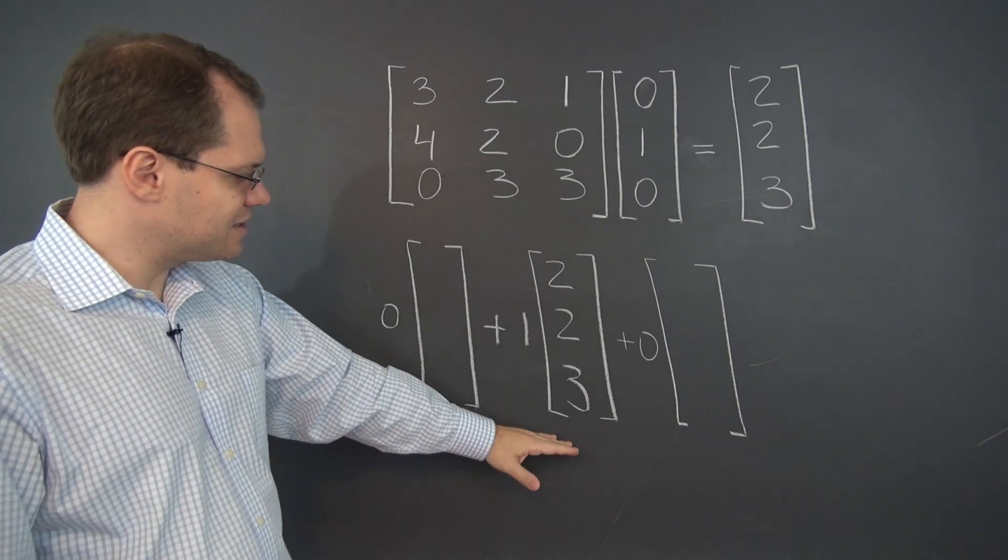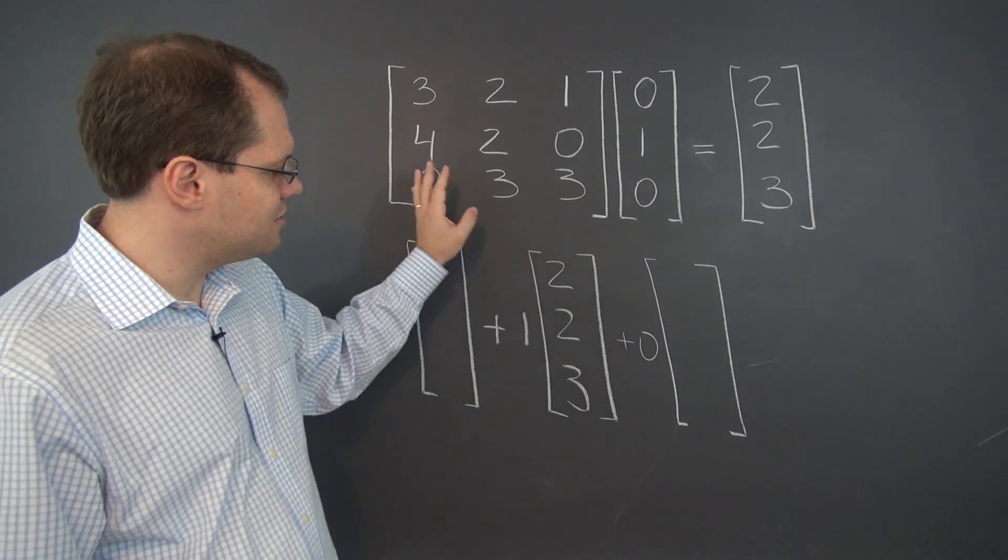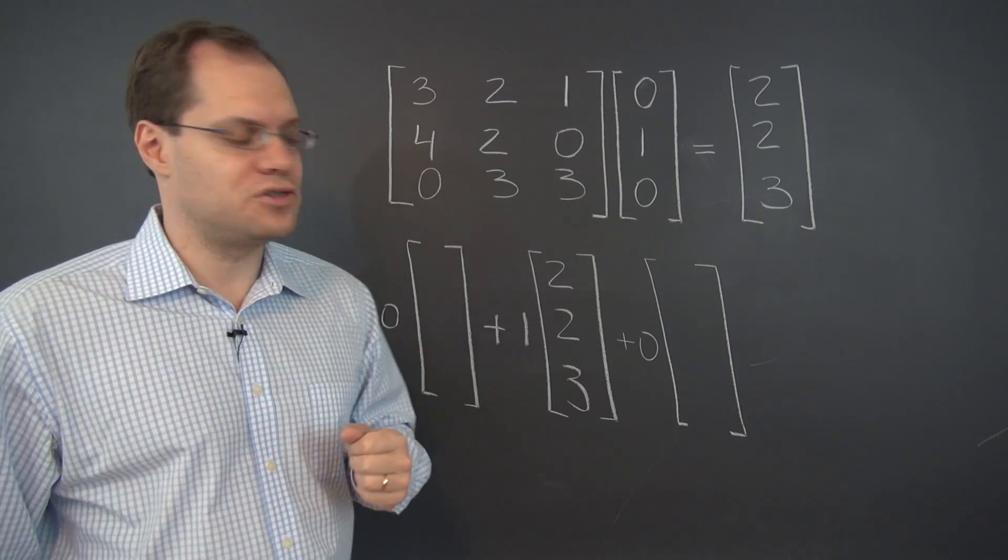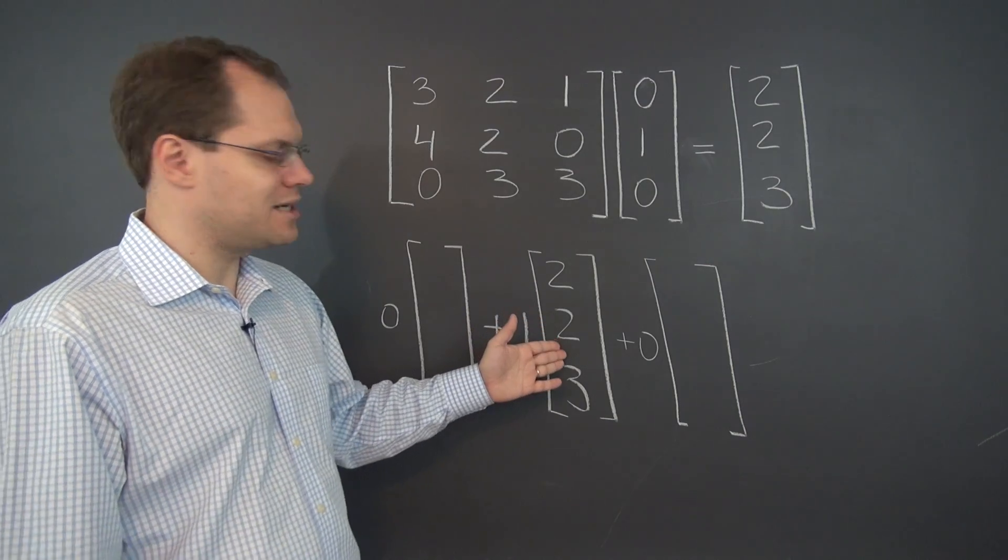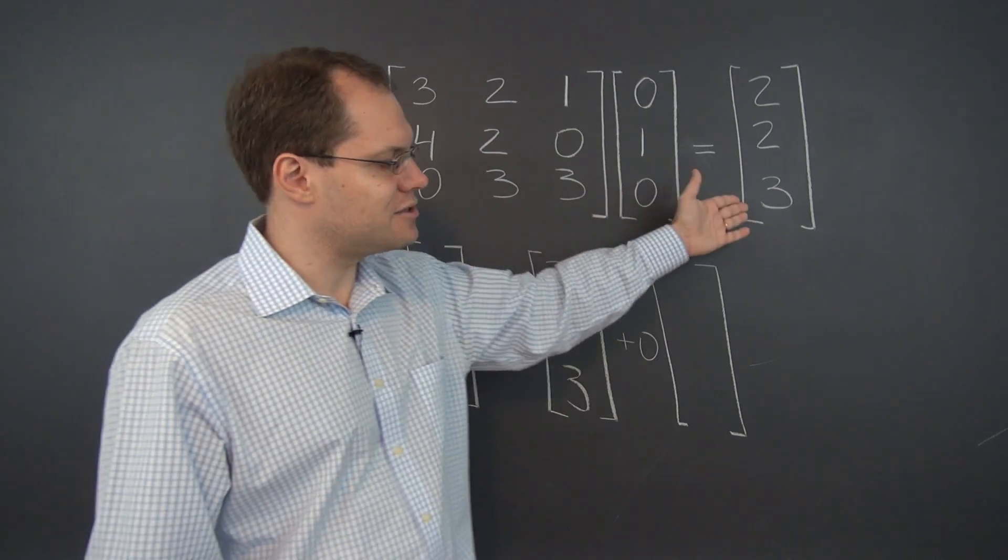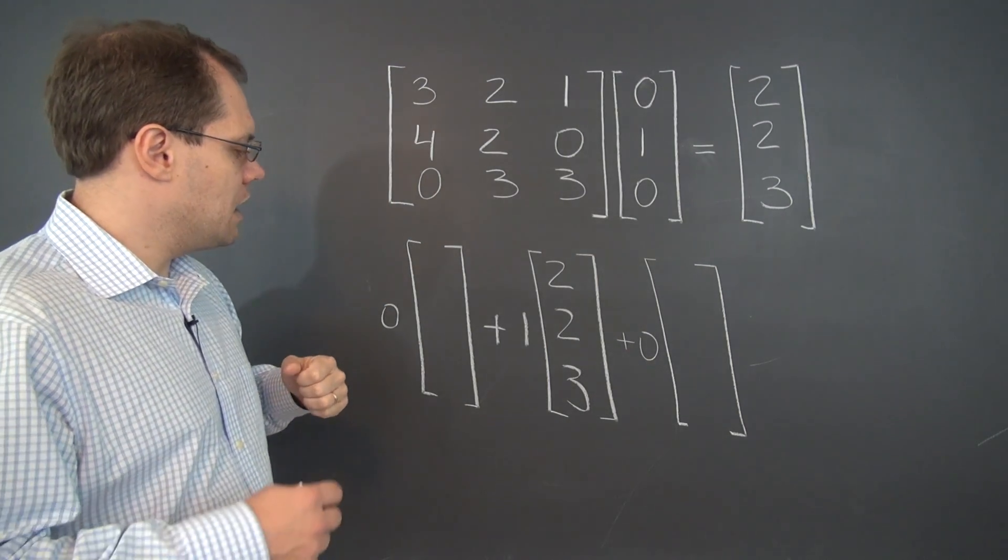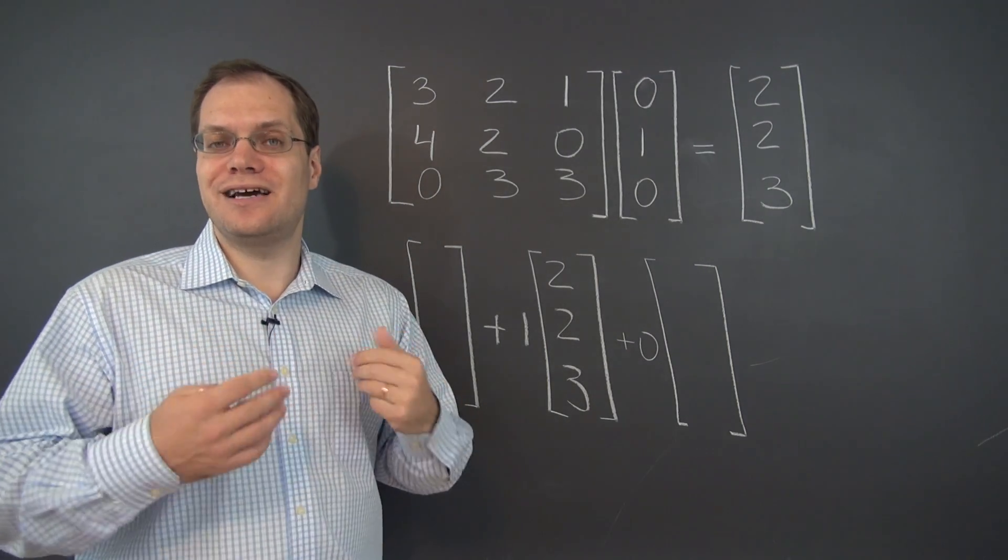Why? Well, it's clear why, because the zeros killed whatever the first and the third columns would have contributed. So all we're left with is one times the second column. So the answer is the second column of the matrix. So that's the slightly larger view.